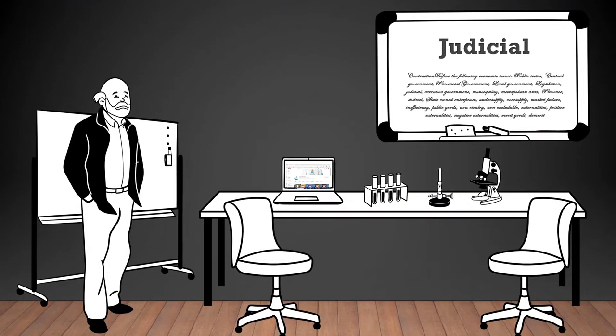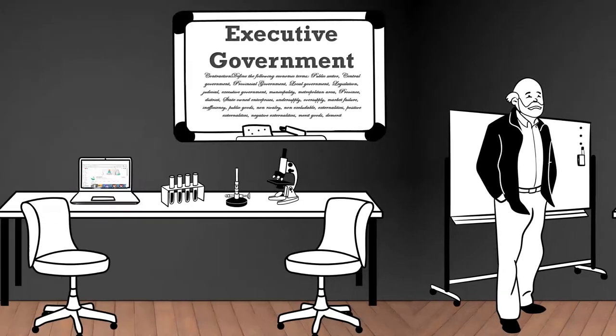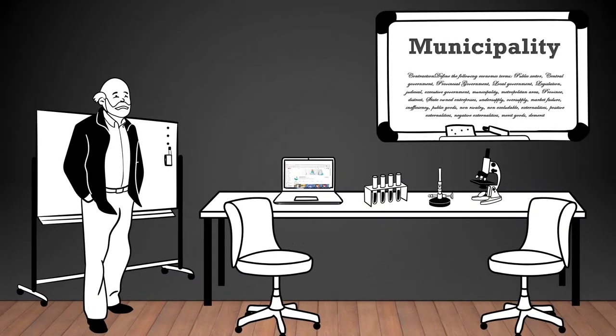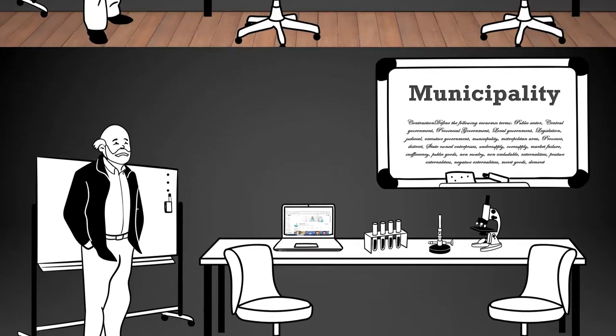Judicial: relating to the judiciary or courts, the branch of government responsible for interpreting laws and ensuring justice is served. Executive government: the branch of government responsible for implementing and enforcing laws and policies. Municipality: an urban or local administrative unit with its own government, typically responsible for providing local services and managing local affairs.